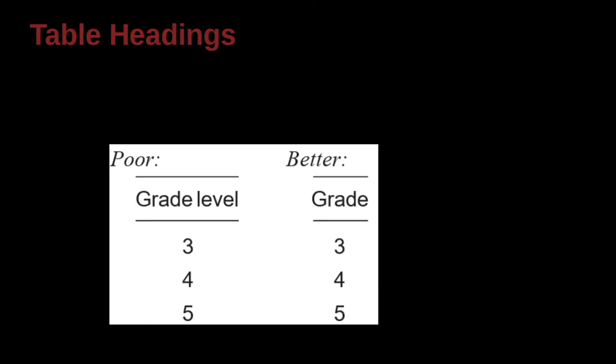What about table headings? So here we have some headings for these columns. So on the left side here is the grade level, and then on the right side is grade. Which one is a better heading for that column? Grade level, the problem is it's getting very long. Grade is much shorter. Now is it unclear?